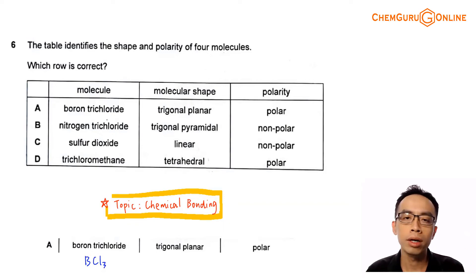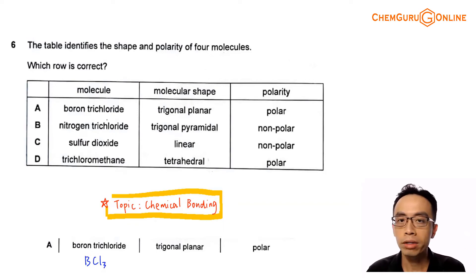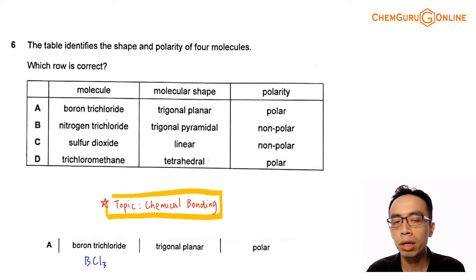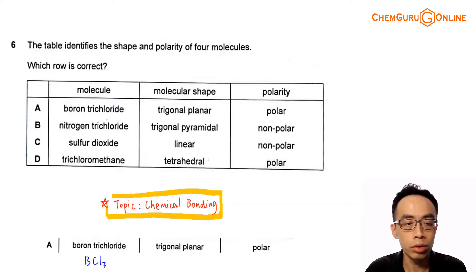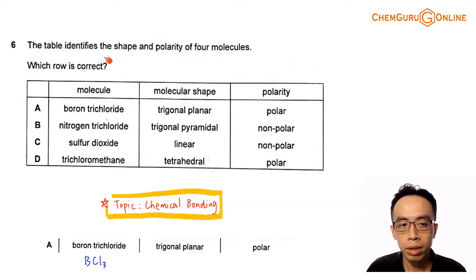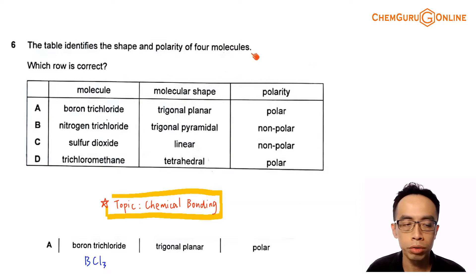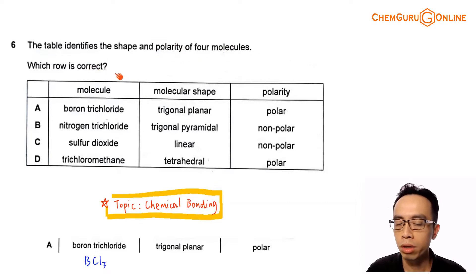Hi everyone, this is Maverick Plot, the chemistry guru. In this video, we want to discuss the suggested solution for the 2021 A-levels H2 Chemistry Paper 1, Question 6. The table identifies the shape and polarity of four molecules. Which row is correct?